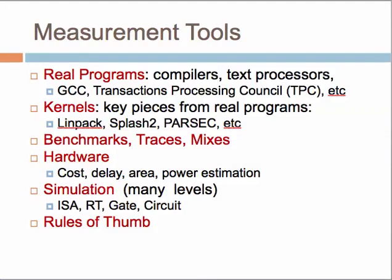To evaluate how our systems work, we will use a set of tools. These could be real programs, for example compilers or text processors. You could look at gcc, which is a program we will run to evaluate its performance. This is generally used in SPEC benchmarks, called SPEC 2006, which is updated to run on various processor architectures. You could get benchmarks for integers, for floating point, and so on.